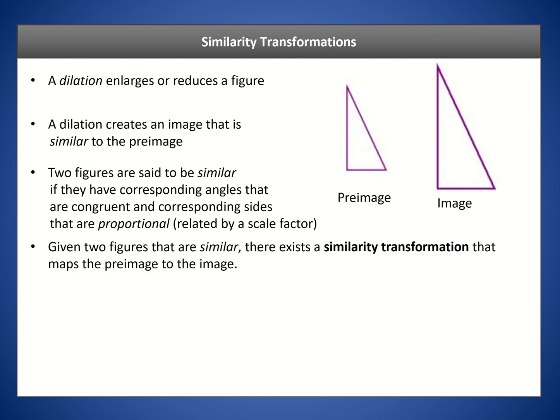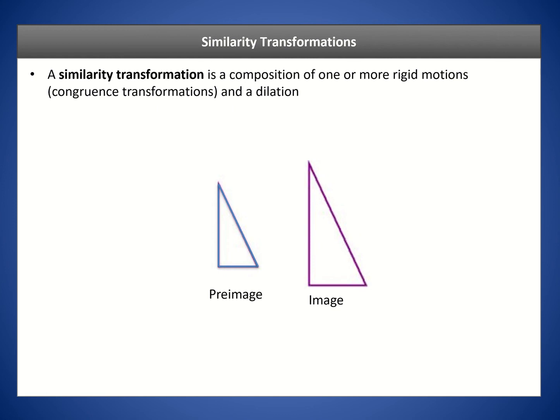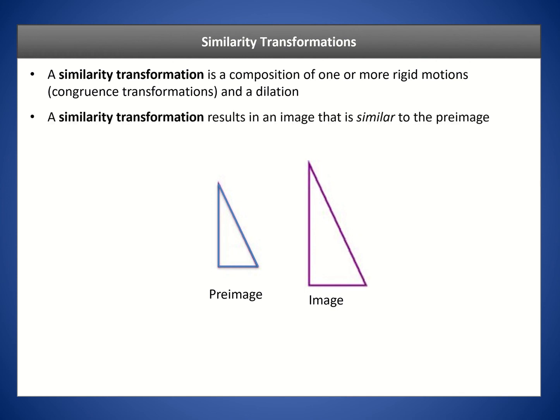Given two figures that are similar, there exists a similarity transformation that maps the pre-image to the image. This similarity transformation is composed of one or more rigid motions — otherwise known as congruence transformations — and a dilation. To map this pre-image to the image, we would first move it to the right and down to overlap with the image, then dilate it to enlarge it so it overlaps entirely.